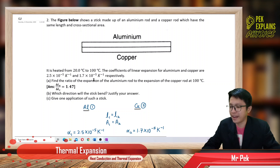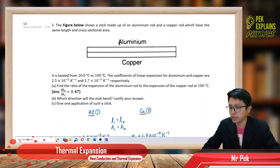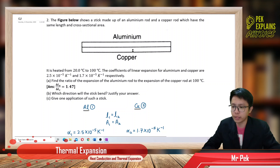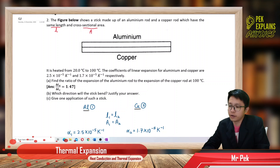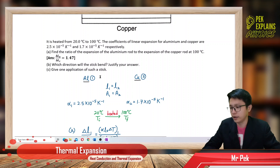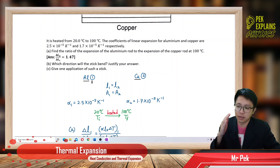Find the ratio of expansion of the aluminum rod to the expansion of the copper rod at 100 degrees Celsius. So I want to find the ratio between these two expansions — the aluminum rod and the copper rod. I have a joint rod, aluminum with copper, and these two rods have the same length. I've put two columns: aluminum and copper. Their length is the same, L1 equal to L2, with aluminum as number one and copper as number two.